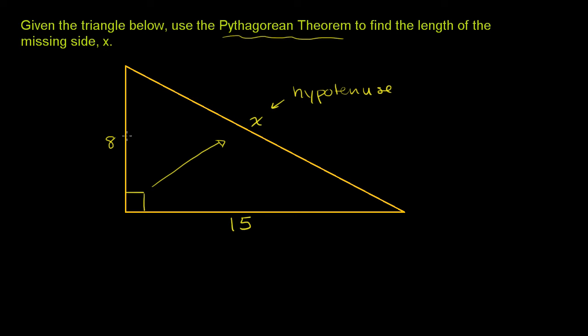So in this case, it would be 8 squared plus 15 squared. The sum of the squares of the shorter sides is going to be equal to the hypotenuse squared.